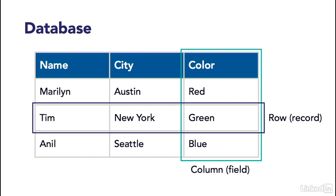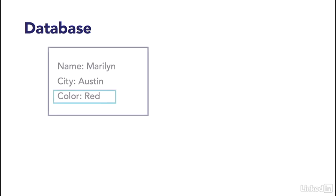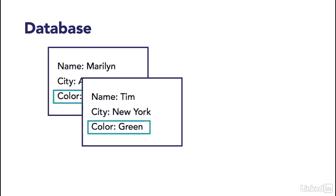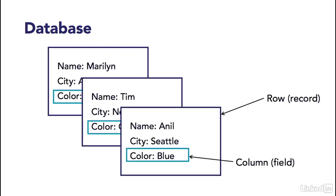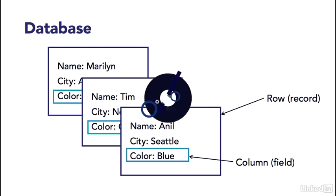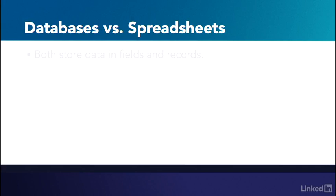You could think of a record like a card with an individual person's information on it. The cards all have the same spaces for information — they have the same fields — but each card pertains to one person, and each one is an individual record. Together, fields and records make up a table.